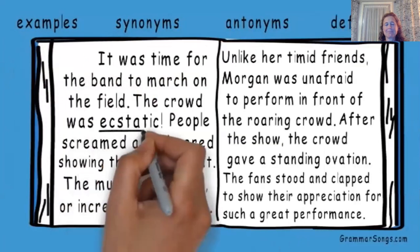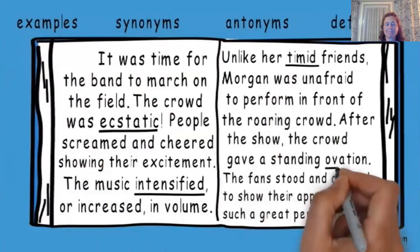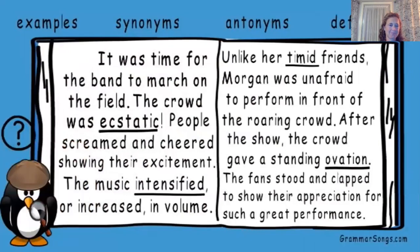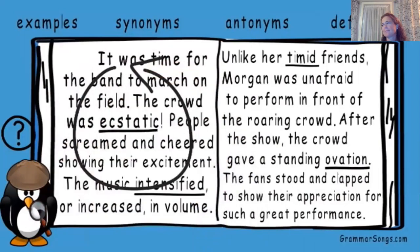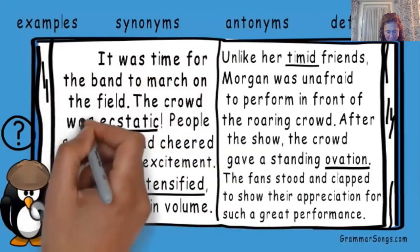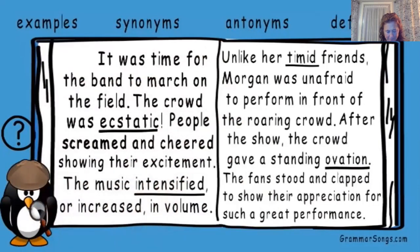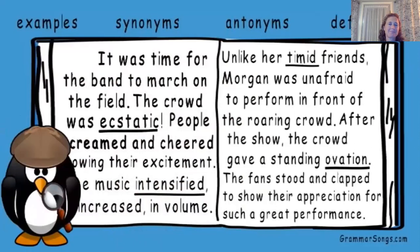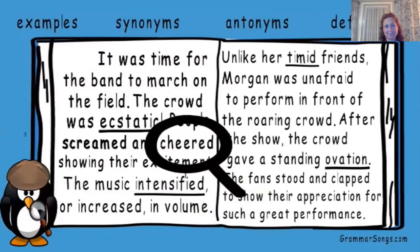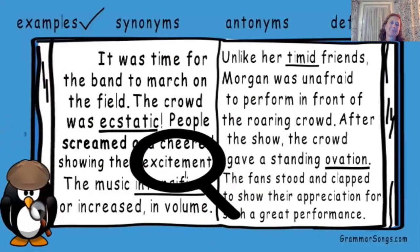Let's read a paragraph and look for the context clues a reader might find if unfamiliar with the underlined words. It was time for the band to march on the field. The crowd was ecstatic. A word's context includes the words and sentences around it, so let's gather all the context surrounding ecstatic. People screamed and cheered, showing their excitement. Screamed and cheered are examples of people who are ecstatic. People who are ecstatic are excited.